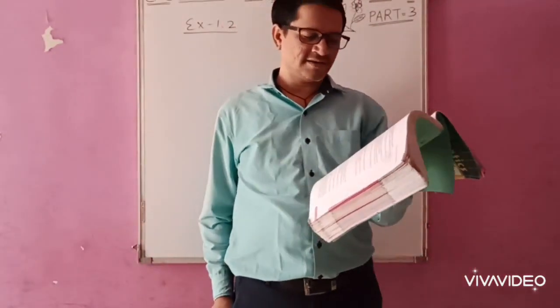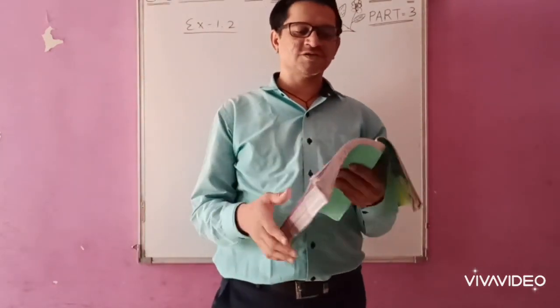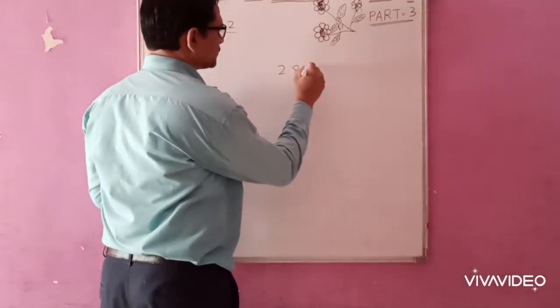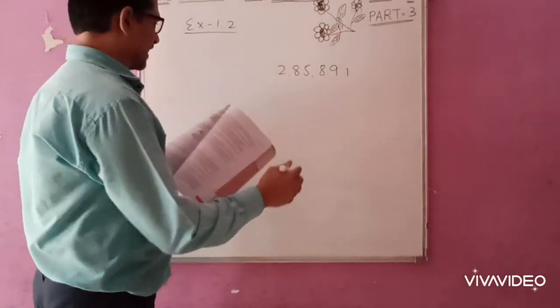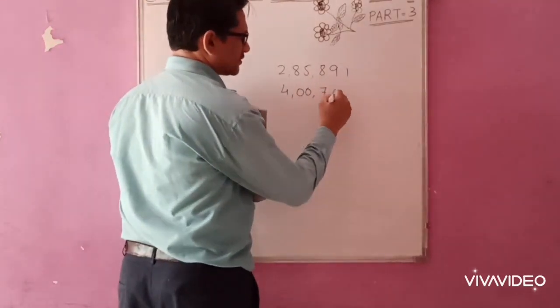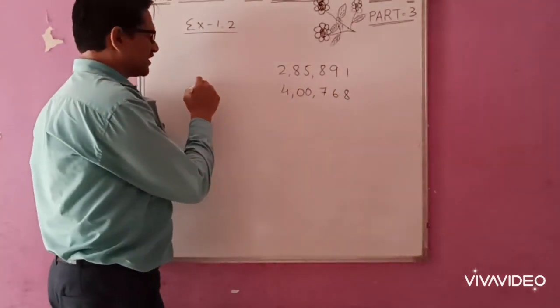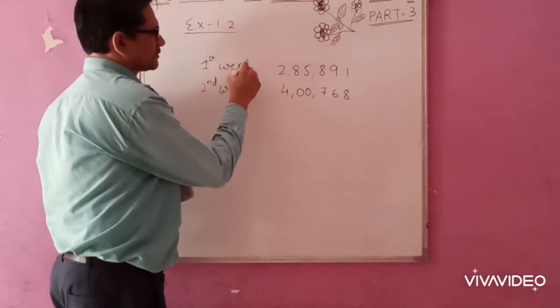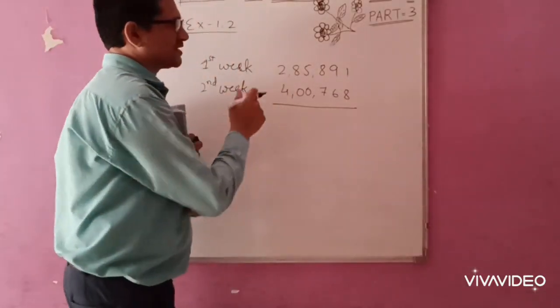So here, you are adding both the numbers and finding out the total answer. So that will be your first question. In which week was the sale greater? So if you compare both the numbers, 2,85,891 and the second number is 4,00,768. So if you compare both the numbers, 2,00,000 and 4,00,000, so 4,00,000 means second week the sale was greater. First week the sale was less. So here, then the question is, by how much? By how much, you are going to subtract these both numbers.